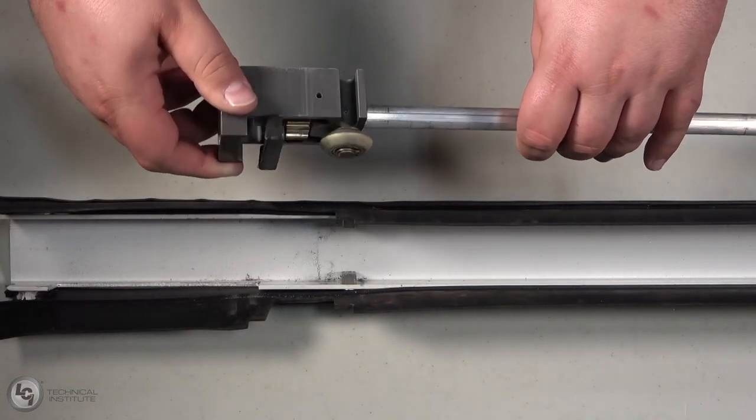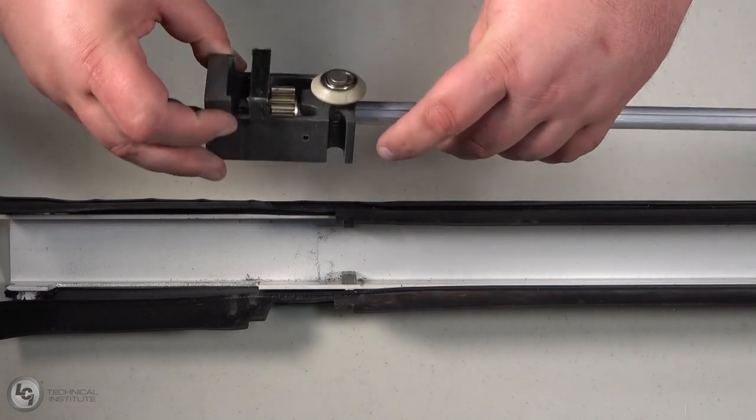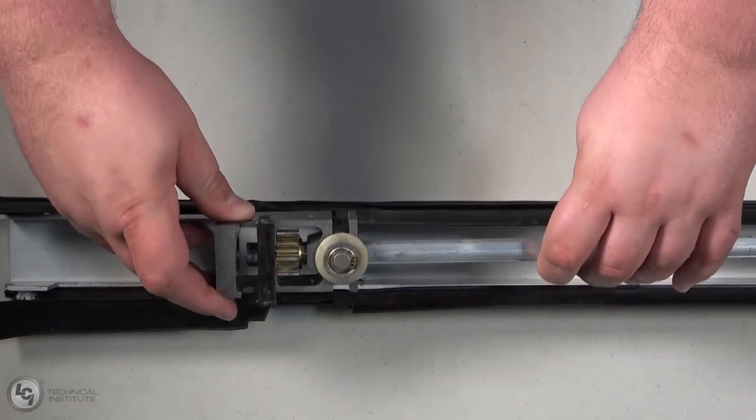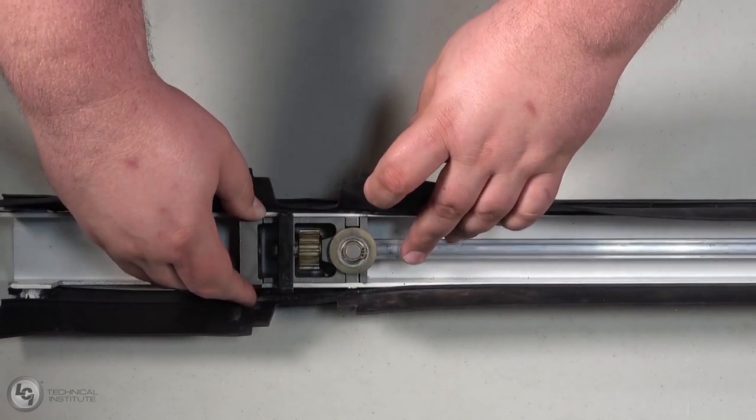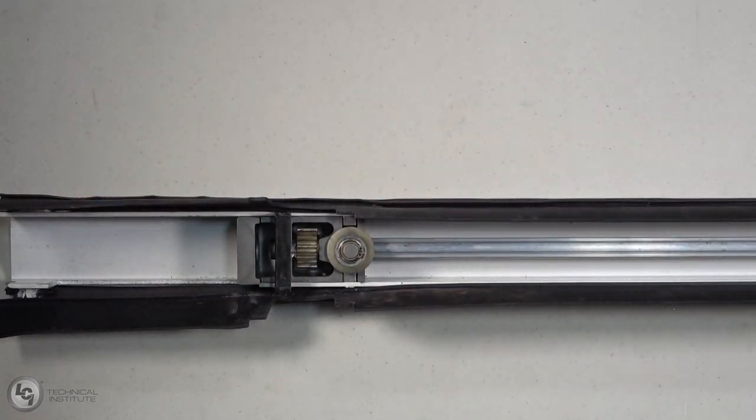With the bearing blocks and components assembled, we need to transfer them into the column. The notches on the sides of the bearing block will be placed around the Gibbs in the column. This will prevent the bearing blocks from shifting up or down during transit.